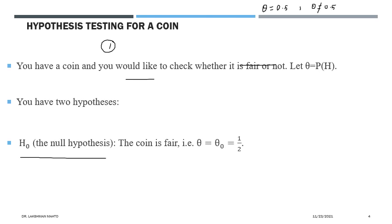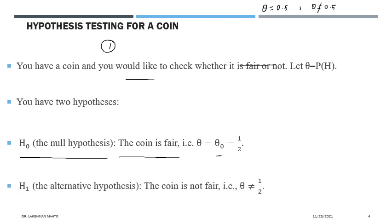The null hypothesis H0 is equivalent to saying the coin is fair, meaning the parameter theta takes the true value theta-naught equal to 0.5. H0 simply states that theta equals theta-naught equals 0.5. The alternative hypothesis H1 says that the coin is not fair, meaning the value of theta is not equal to 0.5. These are the two hypotheses we start with.